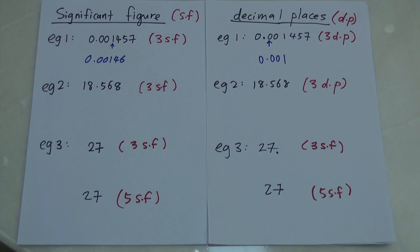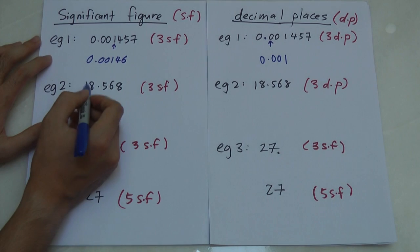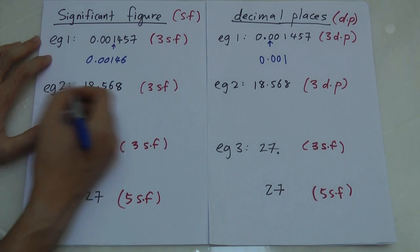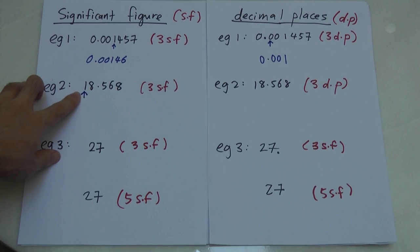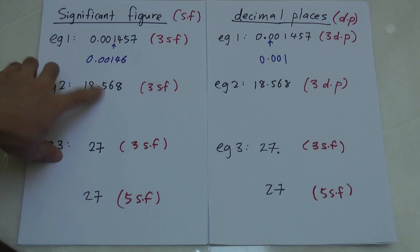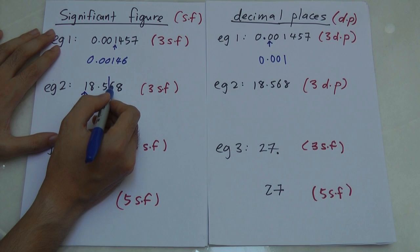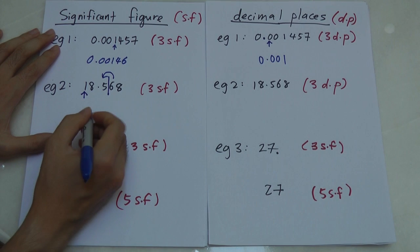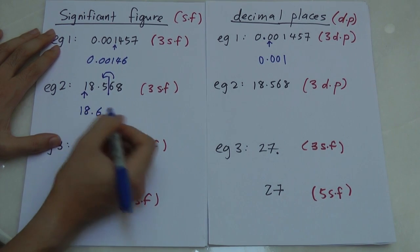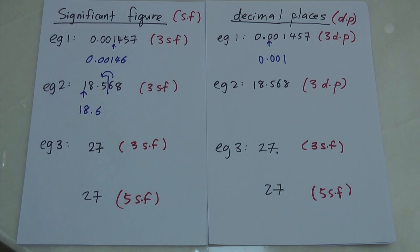Let's look at the second example. Round off to three significant figures. There are no leading zeros here, so the first digit counts as the first significant figure — one, two, three. Draw a line after the third digit. The next number is five or bigger, so we round up and add one, giving 18.6. That's three significant figures.